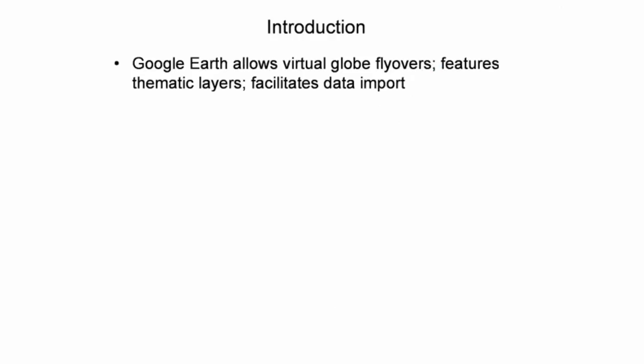Google Earth is a free software program that allows the user to fly over a virtual globe viewing the Earth through high-resolution satellite images. The program also features many data layers as information sources, including points of interest, roads, bus stops, and 3D buildings. Google Earth also enables the user to create annotated maps and to import personal spatial data. This presentation illustrates how to import different data formats into Google Earth and how to enhance the visual appearance of this information.